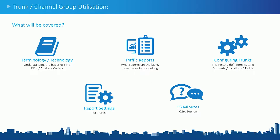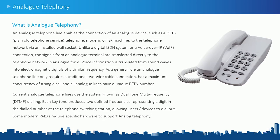The first thing we're going to look at is some terminology and technology. For some of you this will be very familiar. Analog telephony is the older way telephony works — it has a single concurrent usage, so you can only have one concurrent call on an analog line, and it has a single DDI number. Unlike digital or VoIP, it uses analog connections via a two-wire cable, and an analog line only allows for a single call.